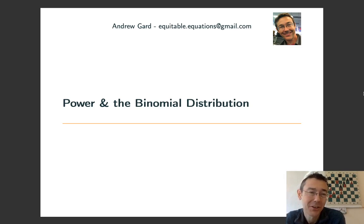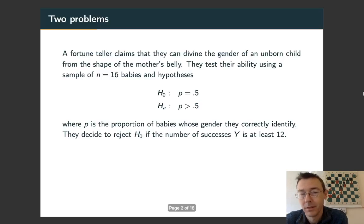Hey everybody, today we're talking more about the power of a statistical test. This time we're going to do a couple of examples that rely on the binomial distribution. They're both going to deal with this situation: we have a fortune teller that claims they can guess the gender of an unborn child by laying hands on the mother's belly. They are going to test their ability using a sample of n = 16 babies.